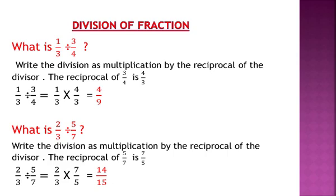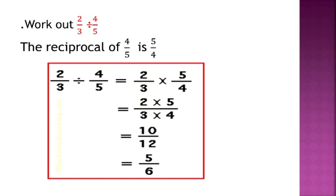The second example: what is 2 over 3 divided by 5 over 7? Write the division as multiplication by the reciprocal of the divisor. The reciprocal of 5 over 7 is 7 over 5. So 2 over 3 divided by 5 over 7 equals 2 over 3 multiplied by 7 over 5. Numerators: 2 times 7 is 14. Denominators: 3 times 5 is 15. The answer is 14 over 15.